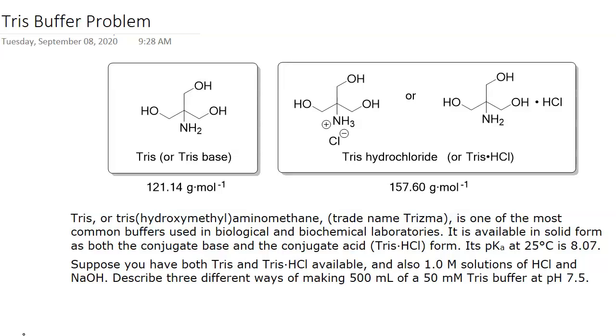Describe three different ways of making 500 milliliters of a 50 millimolar Tris buffer at pH 7.5. So that's a pretty common thing that you would need to do in a biochemical laboratory and also for a biochemistry problem for homework or on a quiz.